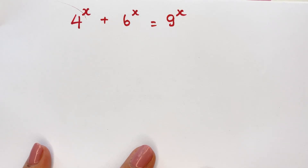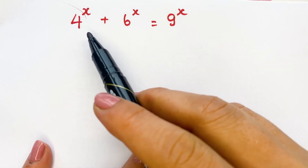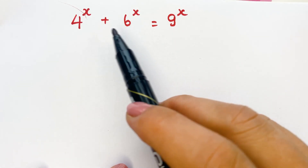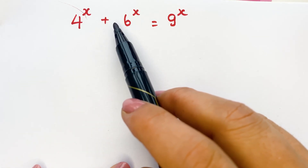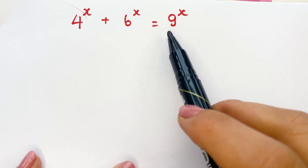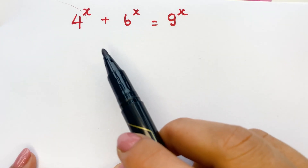Hello everyone! How to find the value of x in the exponential equation: 4 power x plus 6 power x equals 9 power x.